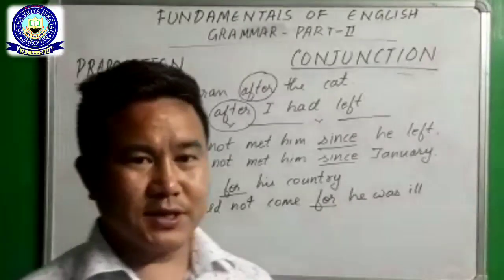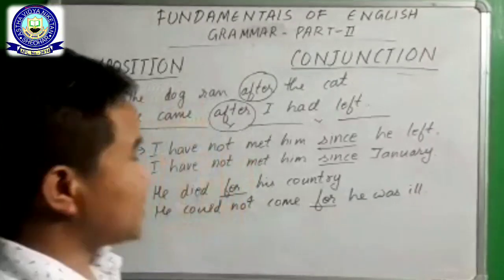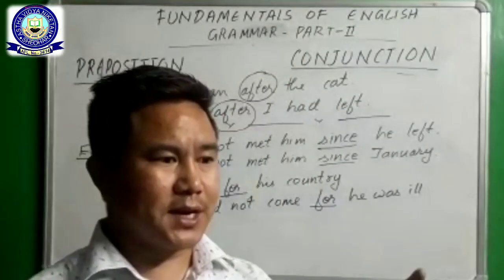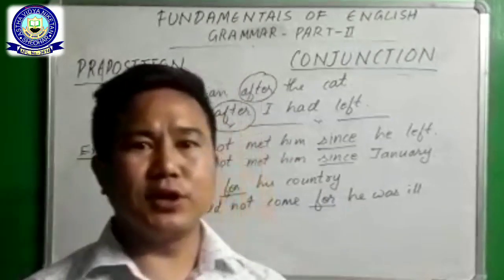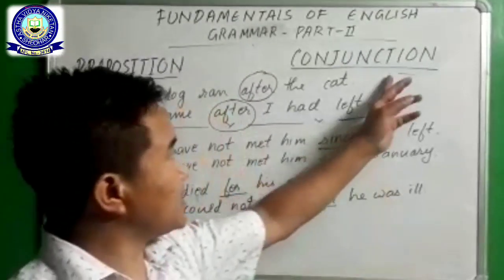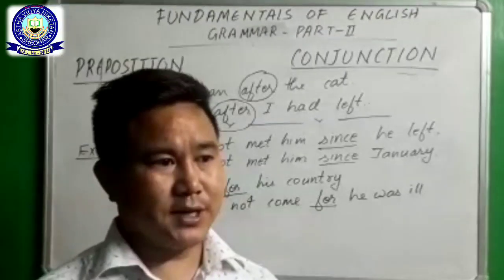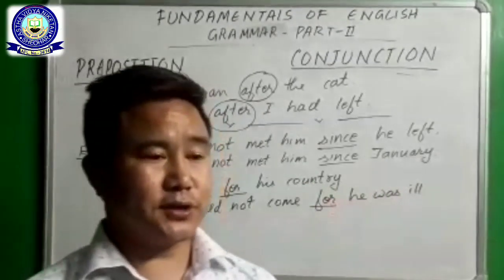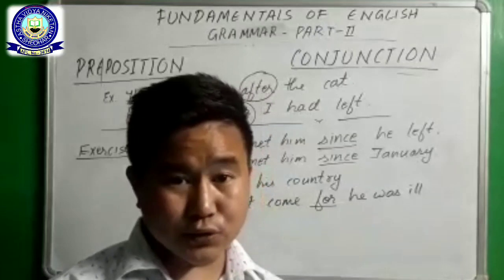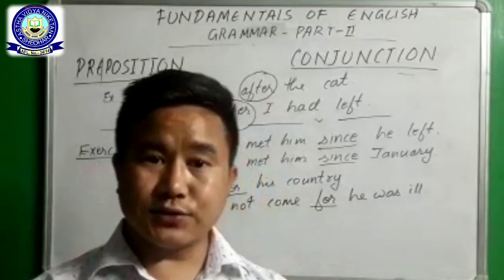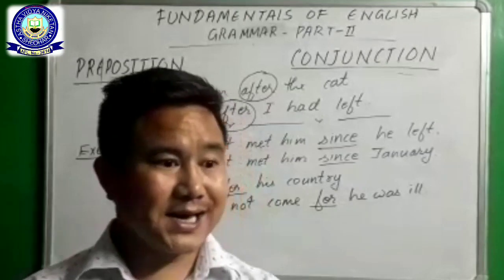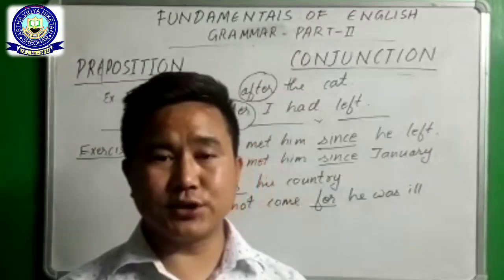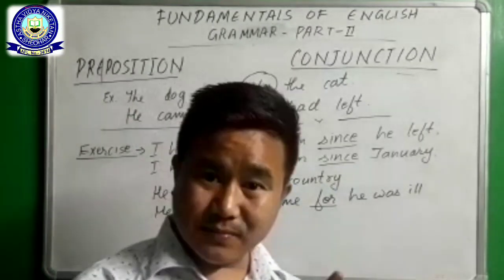Hello students. By now I do hope that you got the definition of preposition and conjunction. Prepositions are words that are usually placed before noun and pronoun in a sentence. On the other hand, conjunctions are joining words — they join word to word, phrase to phrase, clause to clause, and sentence to sentence.